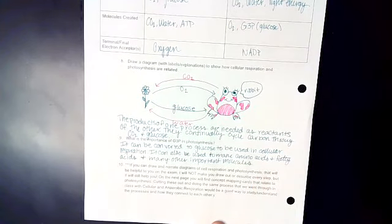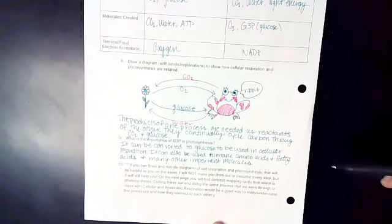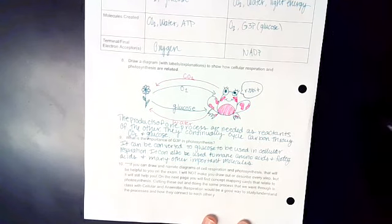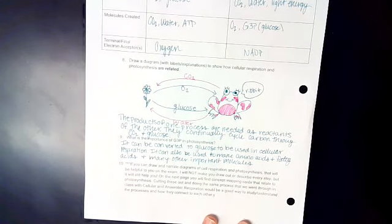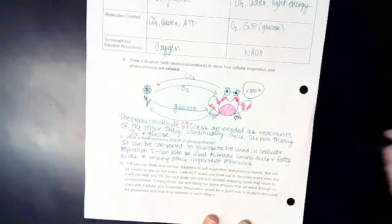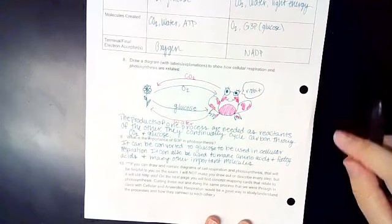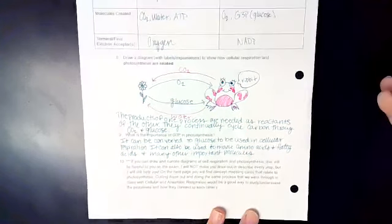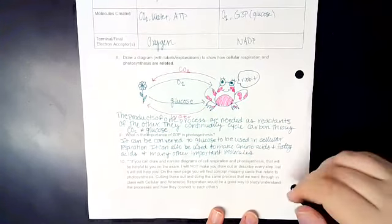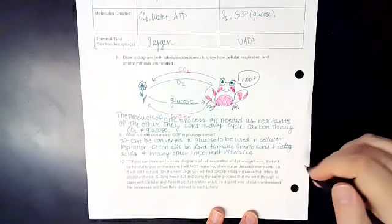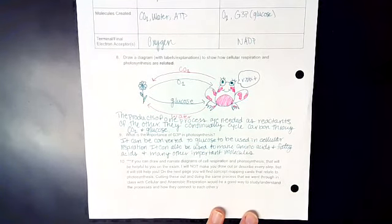And finally, what is the importance of G3P in photosynthesis? So this is the product of photosynthesis. It can be converted into glucose very quickly, but it can also be used to make amino acid, fatty acid, sucrose, cellulose, a whole bunch of different things in the cell. So that's why it's so much more beneficial for the cell to make G3P instead of glucose.